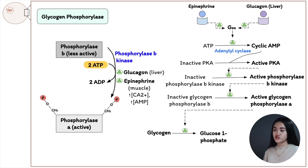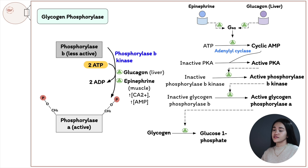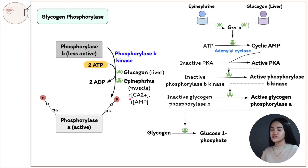Phosphorylase a, or simply glycogen phosphorylase, then breaks down glycogen. In muscle, this supports muscle contraction and is triggered by epinephrine. In the liver, glycogen is mobilized to maintain blood glucose levels, triggered by glucagon — since muscle lacks glucagon receptors. Glycogen phosphorylase is also activated by increased AMP concentration, which reflects the energy state of the cell, signaling lower ATP levels.